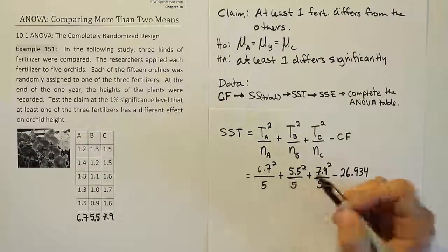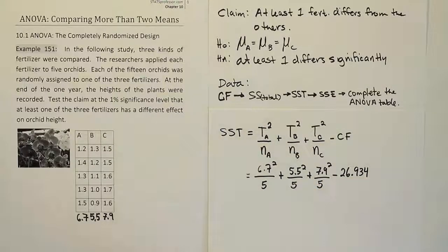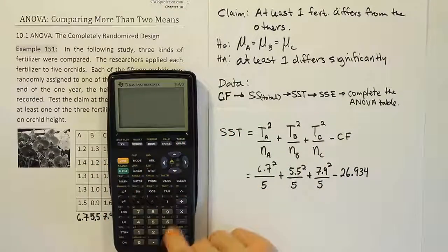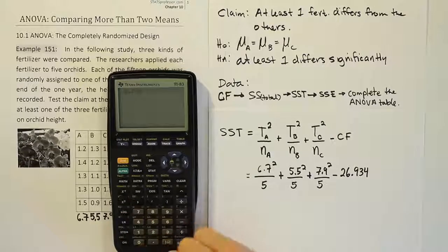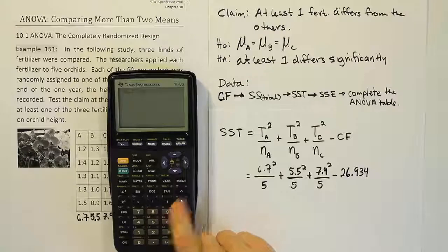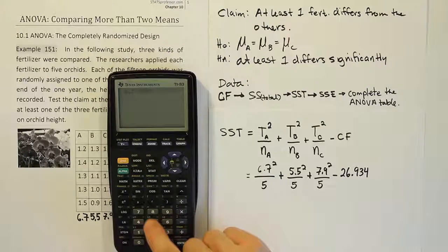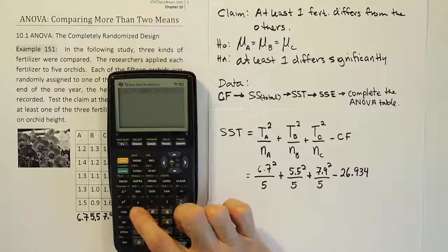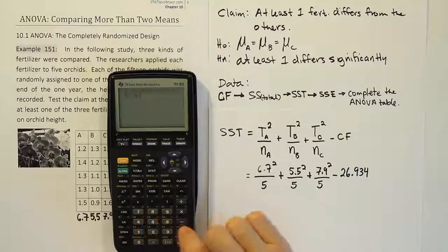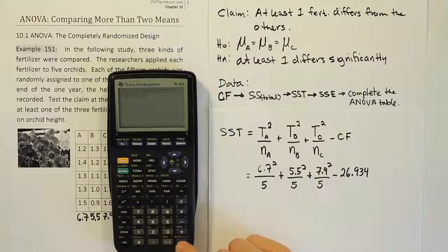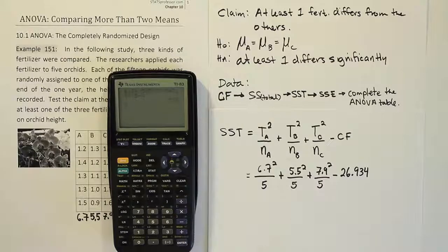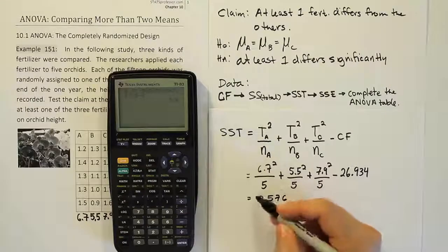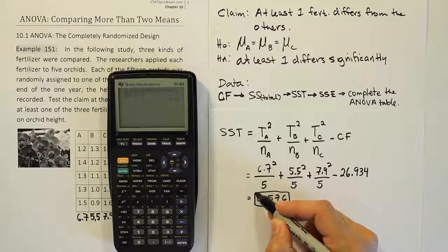Alright, so there's your formula. Let's go ahead and finish it up by just working out those details in our calculator. So we have 6.7 squared divide by 5 plus 5.5 squared divide by 5 plus 7.9 squared divided by 5 minus the correction factor which I stored in my calculator as x. And I hit enter and I get 0.576. So there's your SST.